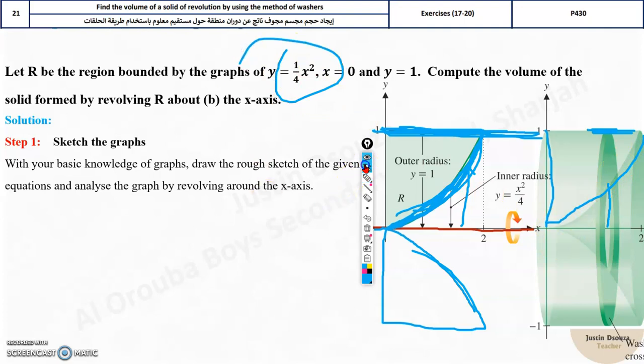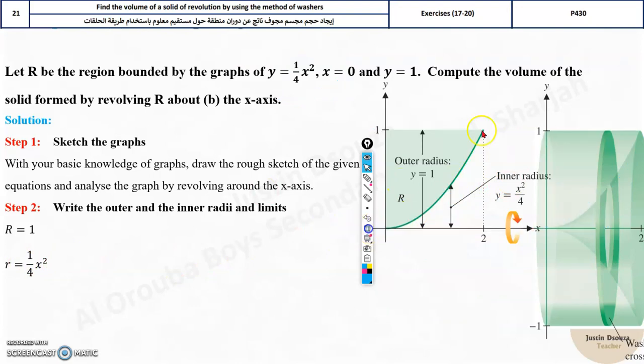That is the equation itself. Now, y equals, r equals, capital R is outer radius 1. And small r is this particular equation, 1/4th x squared. That is how we take it. And then, we will just substitute in the formula.